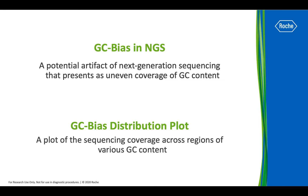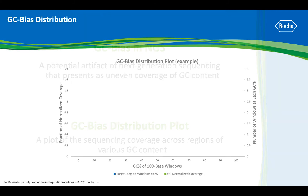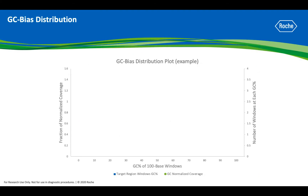A GC bias distribution plot provides a visual representation of sequencing coverage across regions of different GC content, and shows the extent of GC bias in the sequencing data. First, let's look at the components of the GC bias distribution plot.